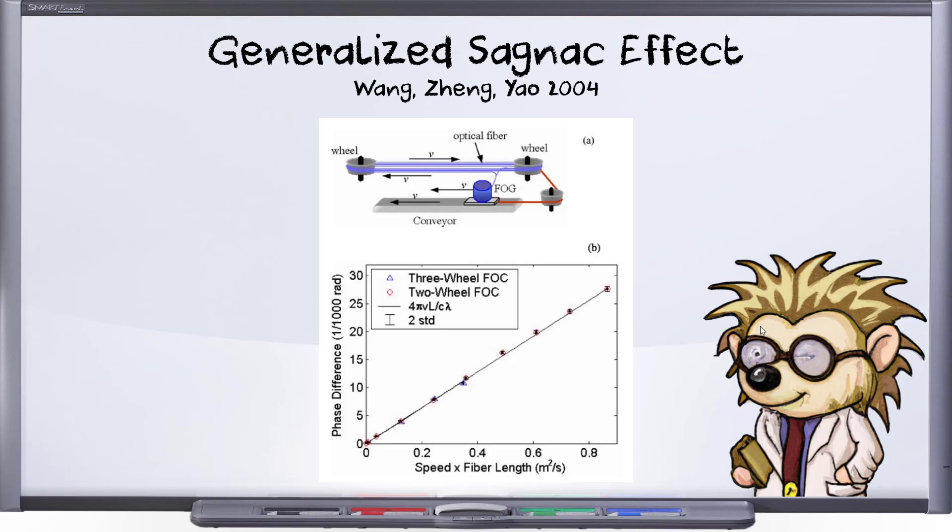Spoiler alert: we're going to find that this whole wheel setup is not relevant to anything and is just an overcomplication, but that was an interesting experiment to try to see if that matters. What Wang found is that it does not matter that the wheel is spinning at all. What's important is that the fiber optic gyro is moving.